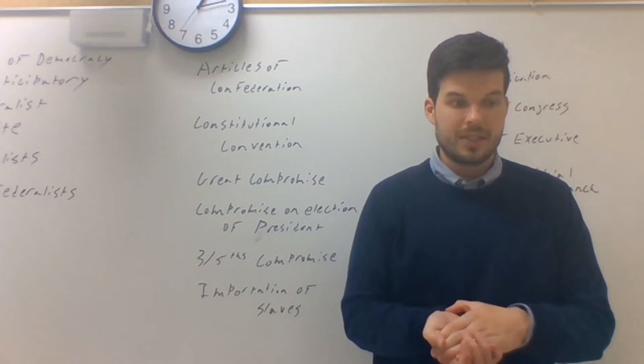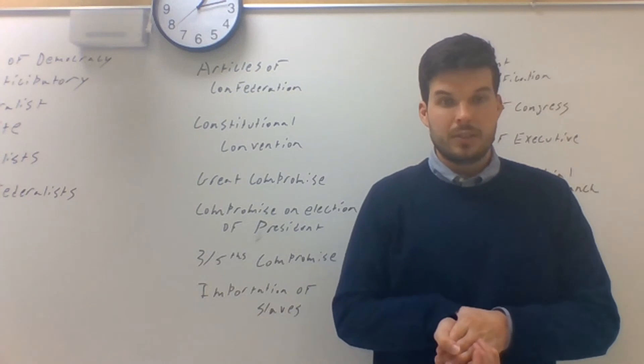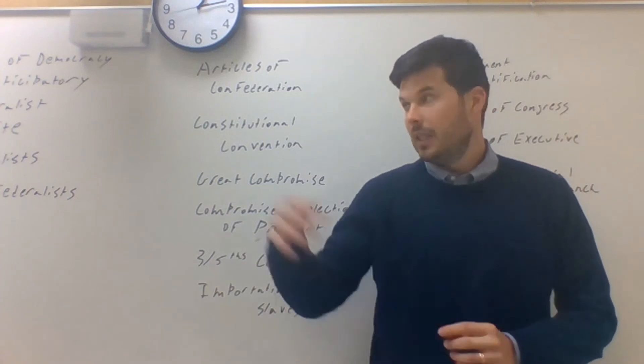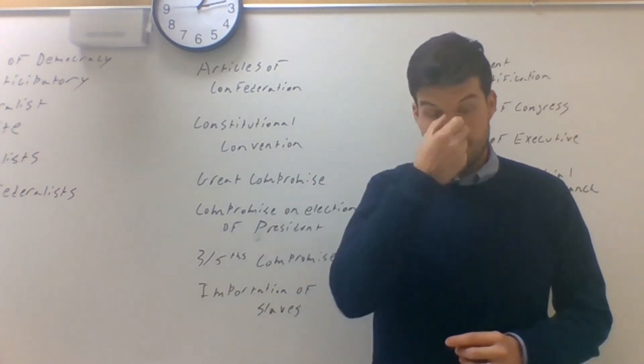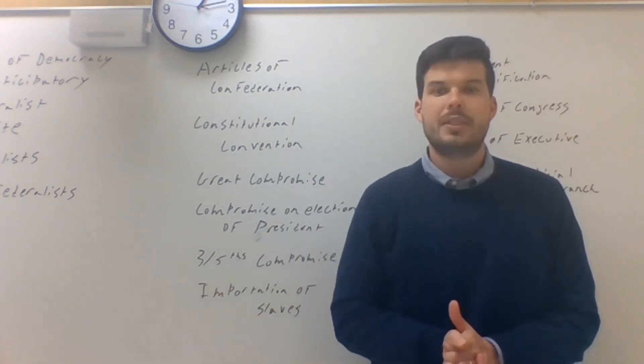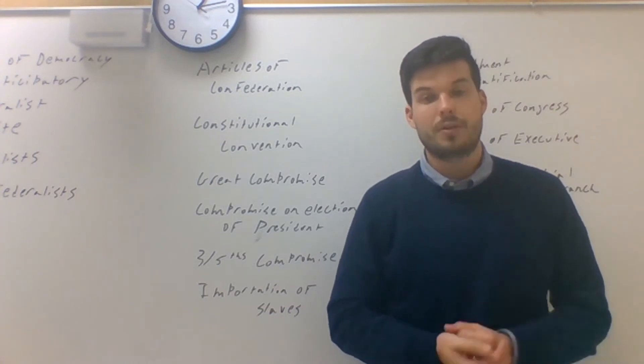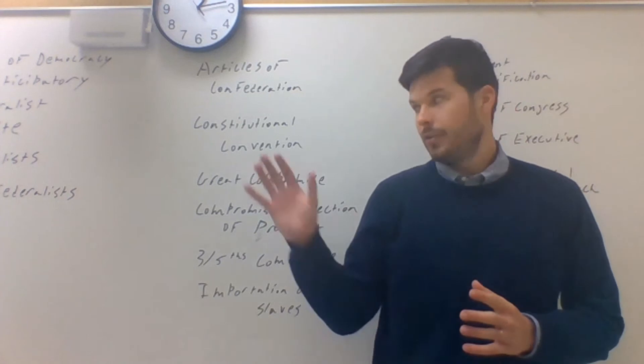We have the compromise on the election of the president. We move from thinking about a popular vote. Hamilton is pretty much arguing for that elite democracy, and he really pushes for the electoral college, which is the modern system that we have.